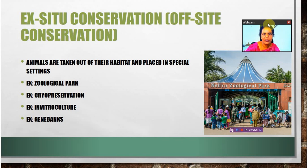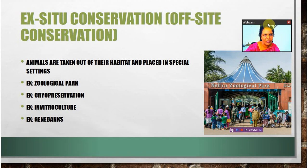When endangered species are present, their genes, embryos, or gametes are protected in special settings, which is called ex situ conservation. Zoological parks are also one type of ex situ conservation — not in situ conservation.